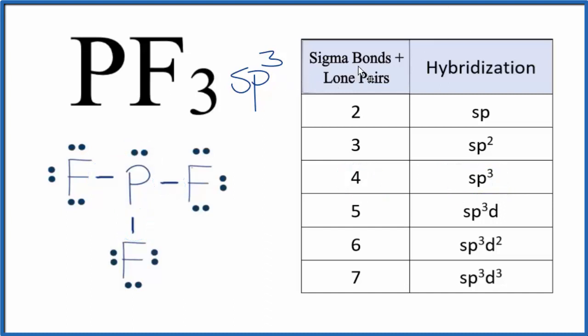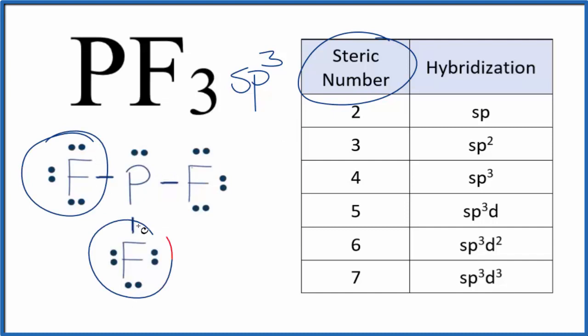The other way is we can look at the steric number. The steric number is the number of electron domains or electron regions around the phosphorus. We have these atoms here, one, two, three, and then we have a lone pair. So we have a steric number of four, again, SP3 hybridization. So these are two quick methods you can figure out hybridization from molecules. There are some exceptions, and there's a link in the description to those exceptions.